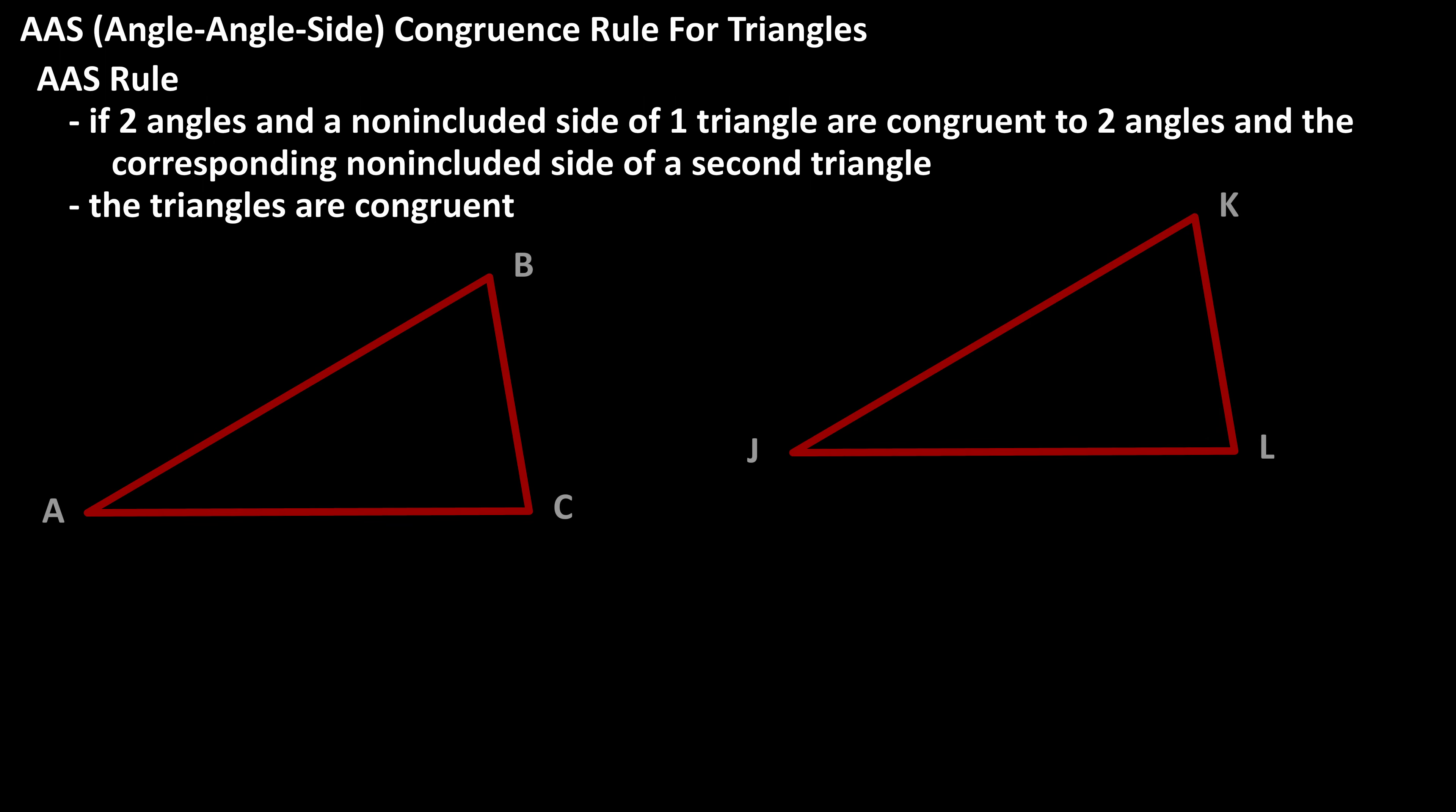As an example, let's say that we have two triangles, and we're given that angle A is congruent to angle J, angle B is congruent to angle K, and segment BC is congruent to segment KL. We can put in an arc with one tick mark for angles A and J.